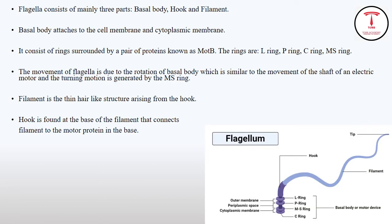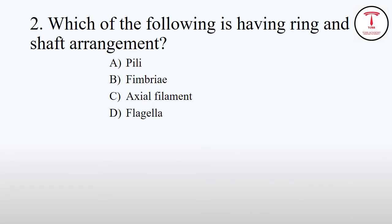Flagella helps in locomotion or movement of the cell. Flagella consists of three parts: basal body, hook, and filament. Basal body is attached to the cell membrane and cytoplasmic membrane. Filament is a thin hair-like structure, and hook helps to attach the filament to the basal body. Basal body consists of several rings: L ring, P ring, C ring, and MS ring. These basal body rings act as a motor and shaft. They rotate and help in motion of the cell. So the answer is flagella.